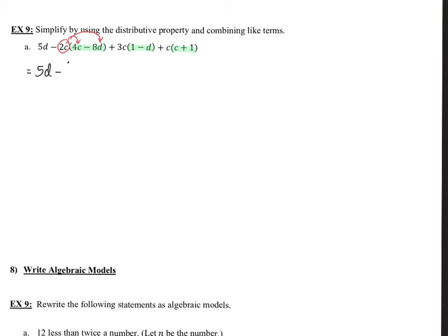Let's go ahead and work on the distributive property. We have 5d minus. You got to be careful with this minus sign here. I'm going to go ahead and keep it by itself and just distribute over the positive 2c to these guys right here. That's going to be 4c times 2c plus 2c times 8d. It doesn't matter, you can put 2c in front or in the back. Then bring down this plus, and let's go ahead and distribute the 3c. So we get 3c times 1. Oh, careful, there's that minus. Minus 3c times d. And the last one, bring down the sign. Let's go ahead and distribute the c in. That'll be c times c, bring down the plus, and then c times 1.